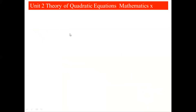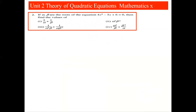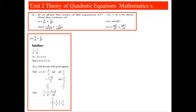The third part is left as an assignment. Question 2: if alpha and beta are the roots of 4x² - 5x + 6 = 0, find the value of (1) 1/α + 1/β, (2) α²β², (3) 1/(α²β) + 1/(αβ²), and (4) α²/β + β²/α.